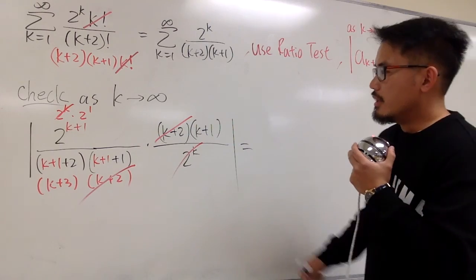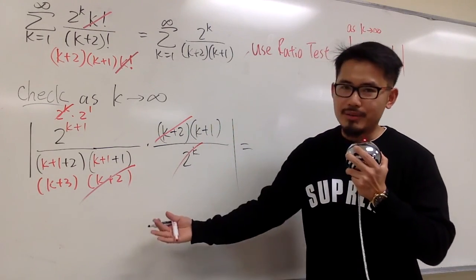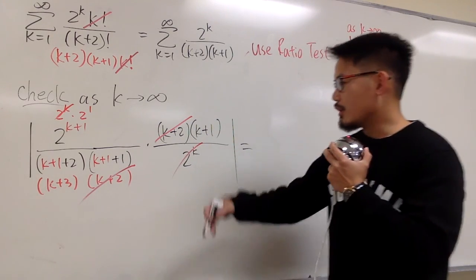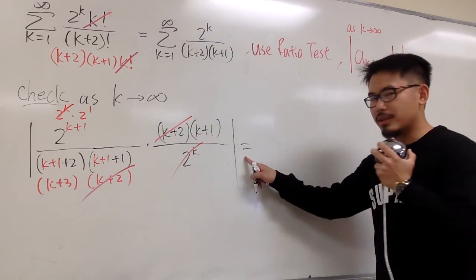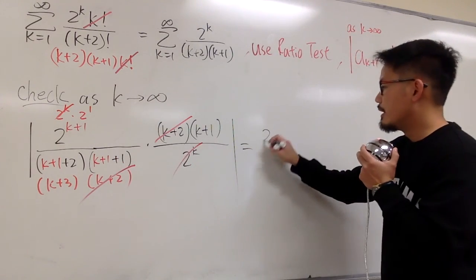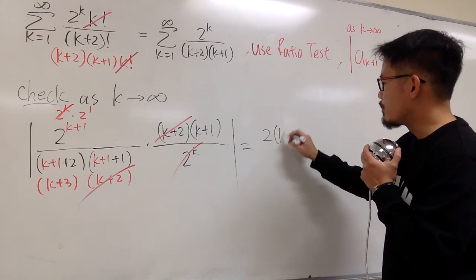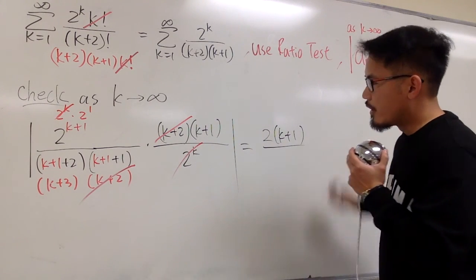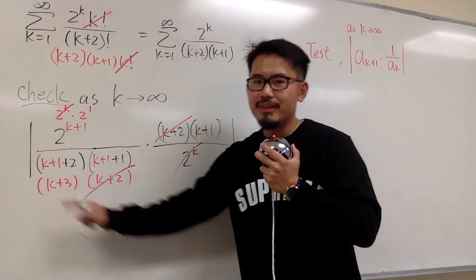All right, this is just algebraic, right? Because we're just simplifying all the algebraic expressions. And that's why I put down the equal sign. And on the top we have 2 and we have the k plus 1 in parentheses, over on the bottom we have k plus 3 only.